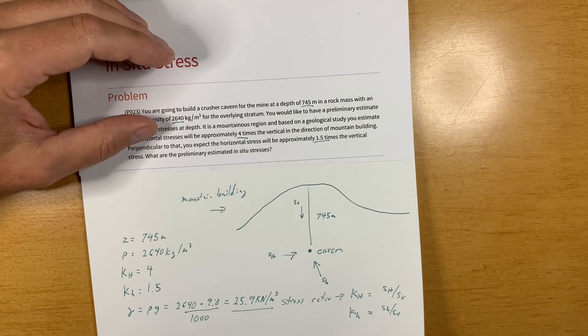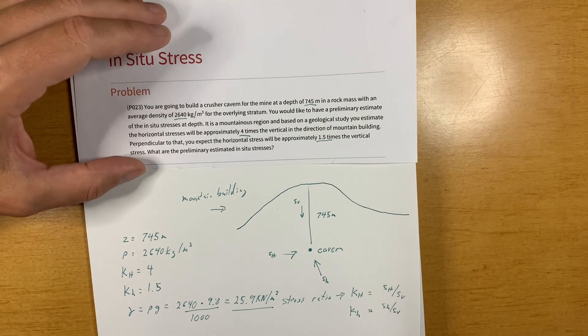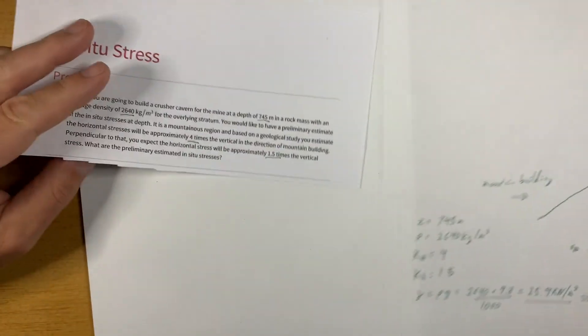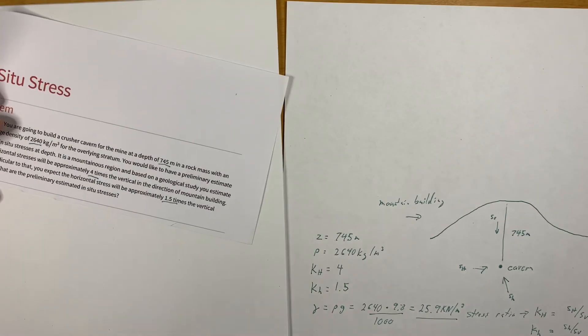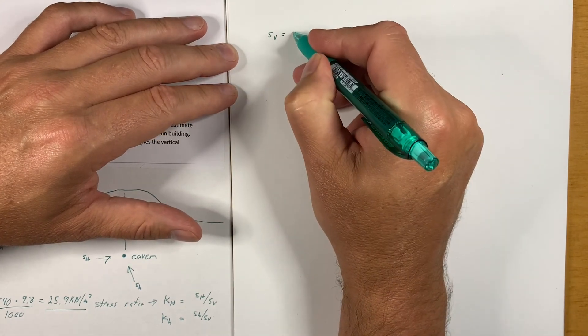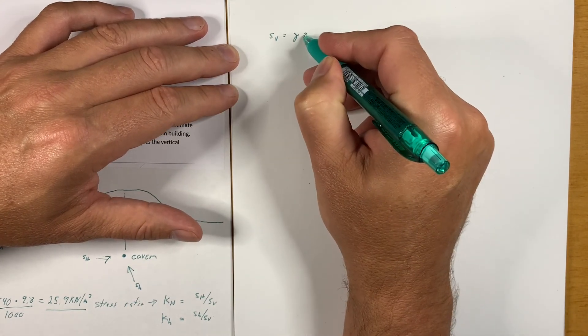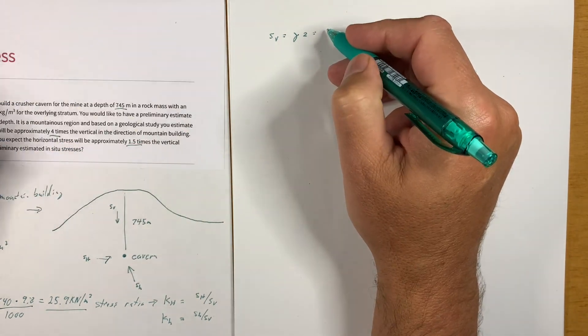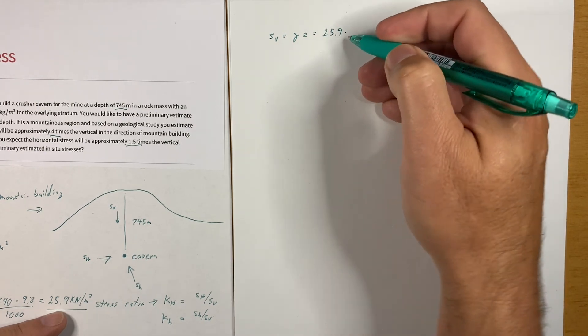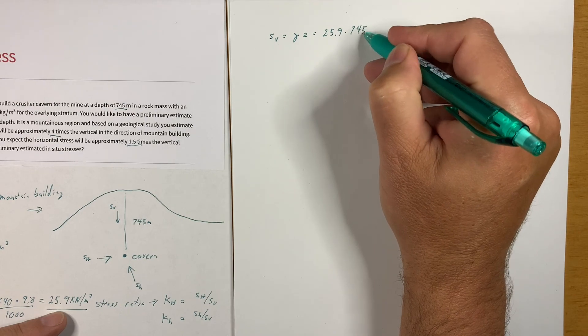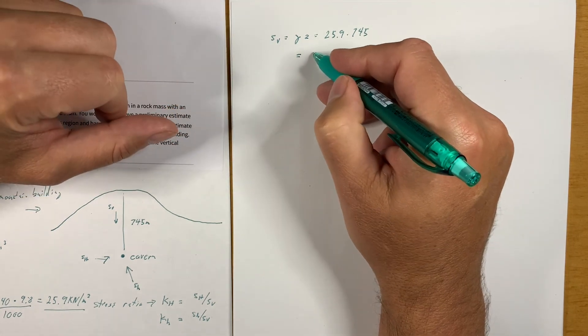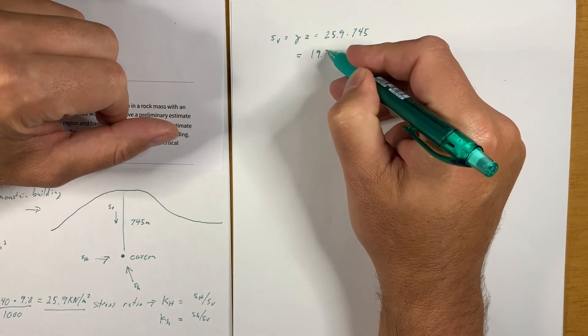All right so let's calculate the vertical stress. S_v is equal to gamma z, 25.9 times 745 meters is equal to 19.3 MPa.